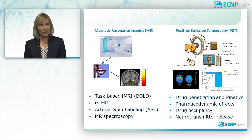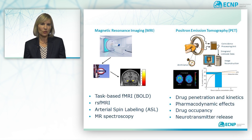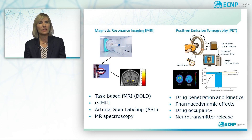PET neuroimaging is a particularly valuable method to investigate how a drug penetrates the brain and to determine drug kinetics. This methodology requires that the drug target can be imaged with an appropriate radioligand, but in cases where such a radioligand has not yet been developed for novel targets, PET can still be used to investigate drug effects on, for example, brain metabolism.